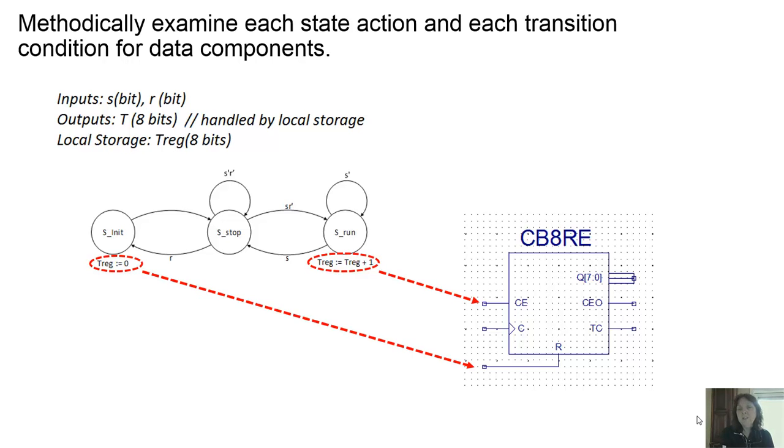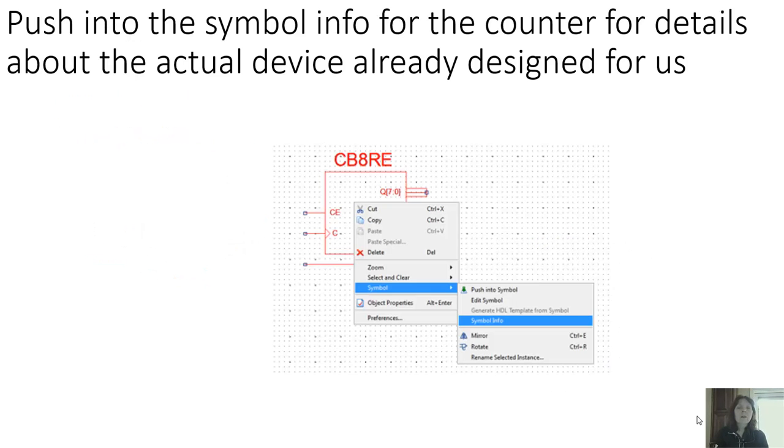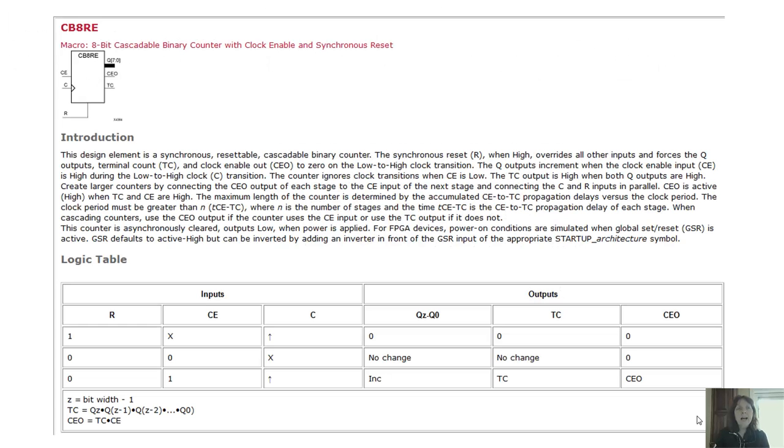Taking a look at that component, that counter, we want to know more about it. We want to know exactly how it works. And so we have to push into the symbol. We have to look at the symbol information. So we do that within our ISE. Taking a look at the information about the CB8RE, we see our inputs are given to us on the left of the state table. The outputs are given to us on the right. And we can read that, and we can figure out how we want to use this device.